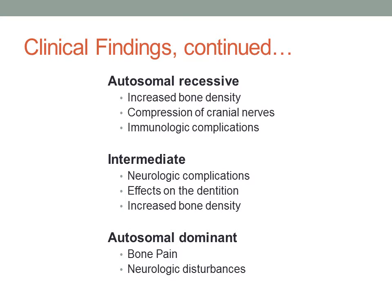The intermediate form, or marble bone disease, has similar neurologic manifestations as the autosomal recessive form, but oftentimes to a less debilitating degree. Impaired vision and hearing can be experienced along with effects on the dentition, such as delay in eruption, oligodontia, dental anomalies, and enamel hypoplasia. Increased bone density may have more effects on the mandible than in other forms. This form does not affect mortality, and therefore patients with marble bone disease will still need dental treatment throughout their lives.